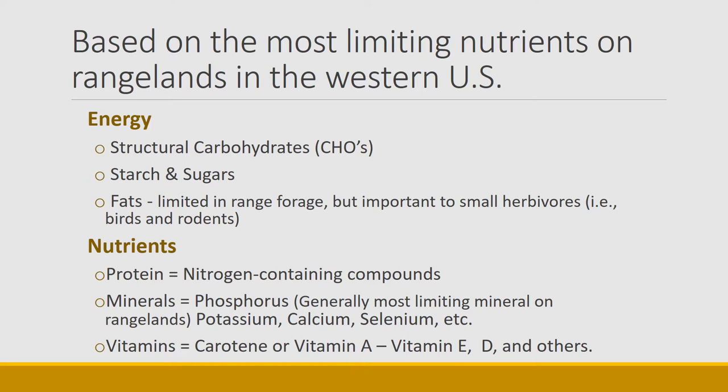For vitamins, the main one of interest on rangelands — especially in young animals — is vitamin A or carotene. It can be limiting because it's abundant in green plants, but when plants go dormant in winter, it becomes scarce. That's why evergreen plants like juniper, which have very little general forage value, can be really valuable as a source of carotene in winter. Other vitamins producers might be concerned with include vitamin E and vitamin D. For me, protein, phosphorus, and carotene are the compounds I focus on most when determining nutritive value of range plants.